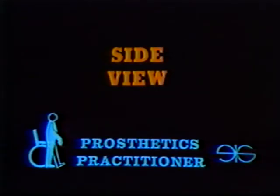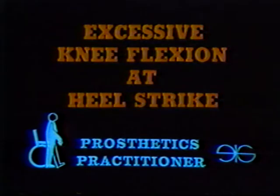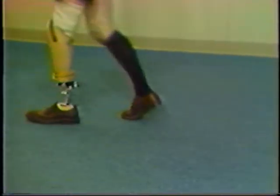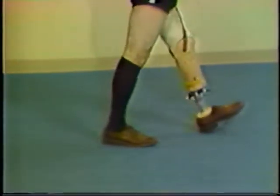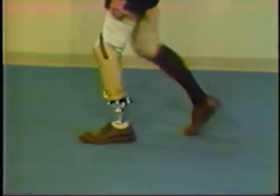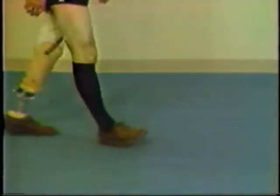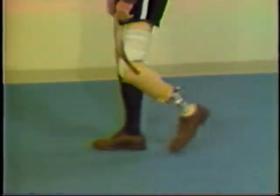The following gait deviation is the first of three you should observe from the side as the amputee walks. First, we look at excessive knee flexion at heel strike. Notice how the knee buckles and will not carry the amputee's weight. The knee kicks forward when this deviation is present. The amputee may say that the anterior distal tibia hurts. Observe the knee buckling as the amputee enters stance phase. This can be caused by too stiff a heel wedge, the foot position too far posterior or too dorsiflexed, or the foot too tight in the shoe hampering foot action.